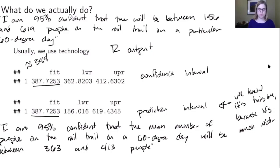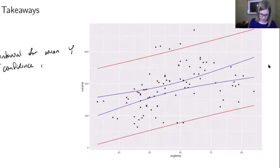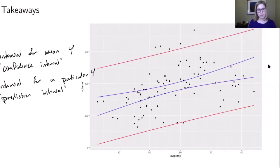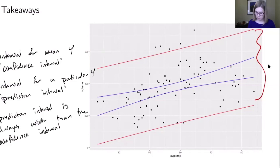The main takeaway is that there are two kinds of intervals: a confidence interval for a mean y, and a prediction interval for a particular y — both different from the confidence interval for a slope from section 9.1. The prediction interval is always wider than the confidence interval. In this picture, the red interval is the prediction interval and the blue interval is the confidence interval.